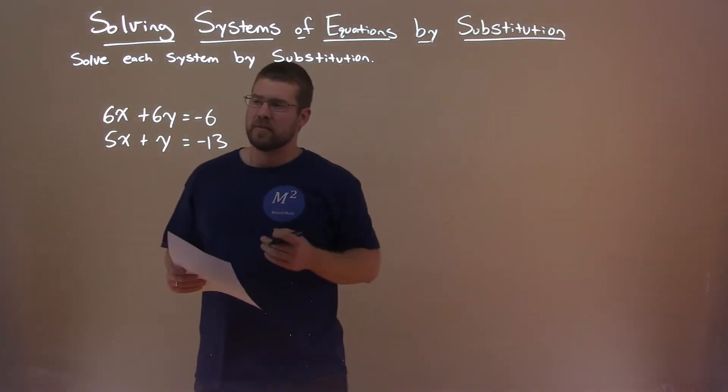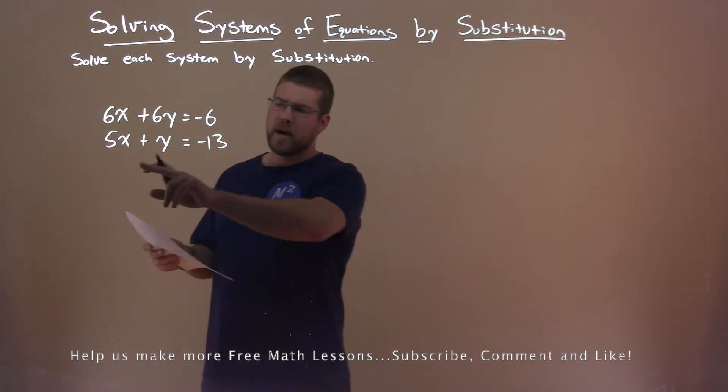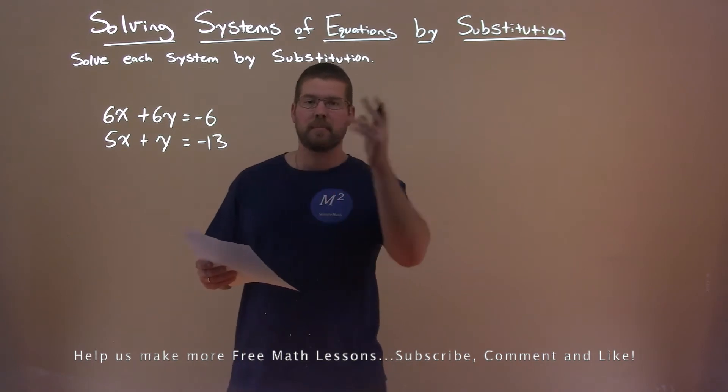We're given this system: 6x plus 6y equals negative 6, 5x plus y equals negative 13, and we need to solve this system by substitution.